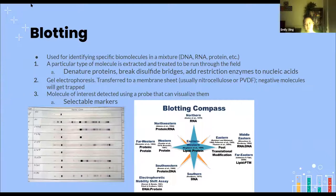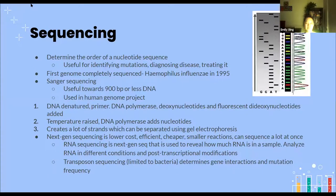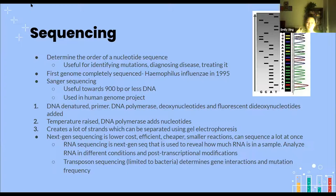Sequencing is probably the biggest part where genetics and biotechnology intersect. Sequencing determines the order of the nucleotide sequence — your DNA is made out of different nucleotides: A, G, T, and C. It's useful for identifying mutations, because if you know what the nucleotide sequence should be, it's easy to see the odd one out. It also helps diagnose diseases and treat them by finding and fixing the mutation using other biotechnology.